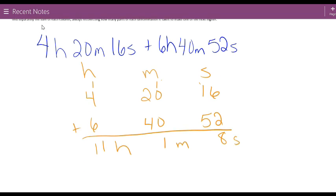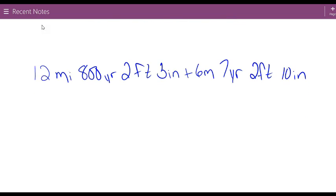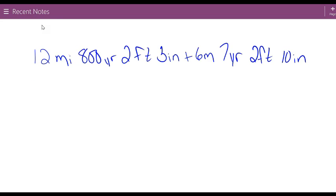We will go ahead and do another one where we're going from miles, yards, feet, inches. There are 12 inches in a foot, 3 feet in a yard, and 1,760 yards in a mile. So we have those different conversions.